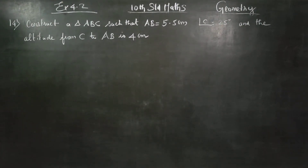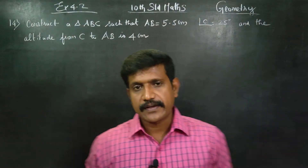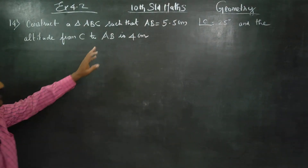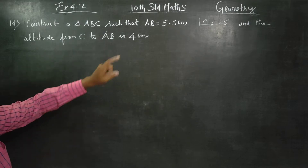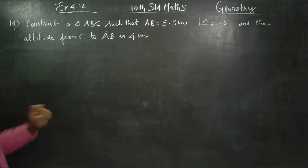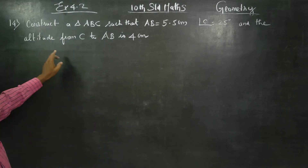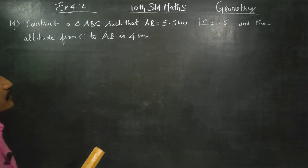Dear 10th standard students, I am Metro Karunagaran. In exercise number 4.2, sum number 14: construct a triangle ABC such that AB is equal to 5.5 cm, angle C is equal to 25 degrees, and the altitude from C to AB is 4 cm.